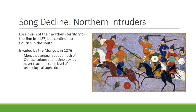The Song fell apart like all dynasties, mostly due to northern invaders. The Jin conquered most of the Song's northern territory by 1127, but the Song continued to flourish in the south. However, in 1276 the Mongols invaded and conquered the Song entirely. Even though the Mongols adopted much Chinese culture and technology, many of the most advanced Song discoveries went unheeded and ignored, halting the rapid technological advancement of the Song period. We can probably blame the Mongols for preventing Song China from developing into an industrial power centuries before Europe.